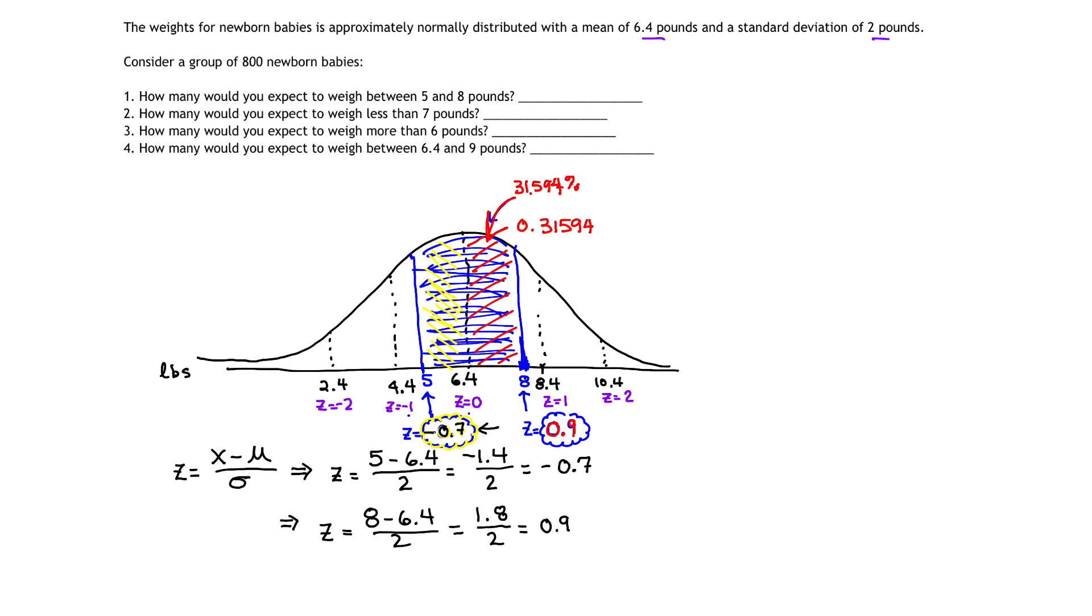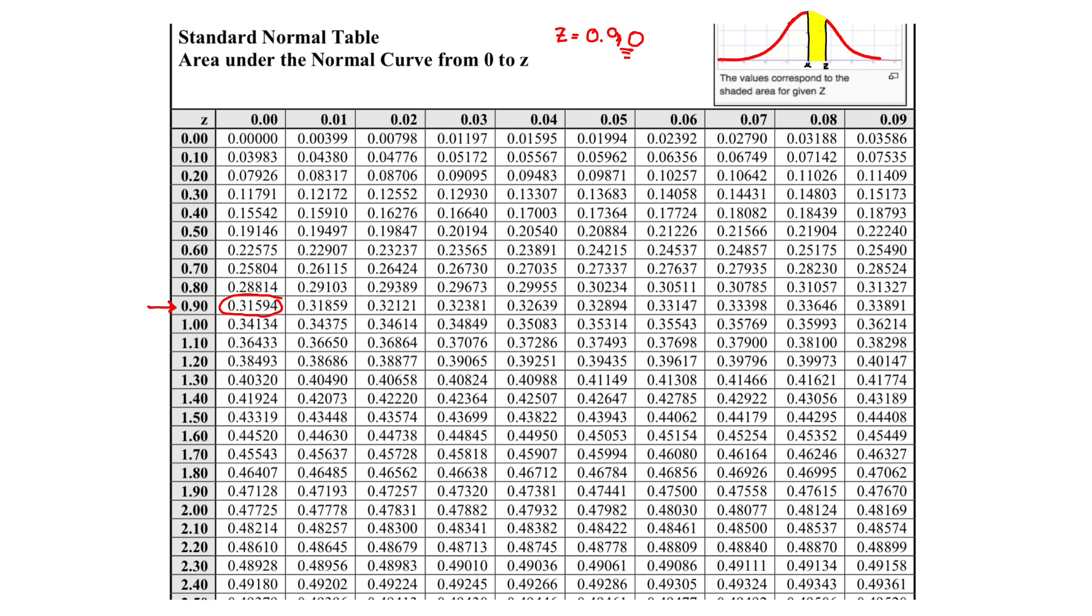because the right side of our chart and the left side, because my chart only has positive values, and I know that the left side of my normal curve is the same as the right side of my normal curve, instead of looking for negative 0.7, I can find the area by just looking for positive 0.7.